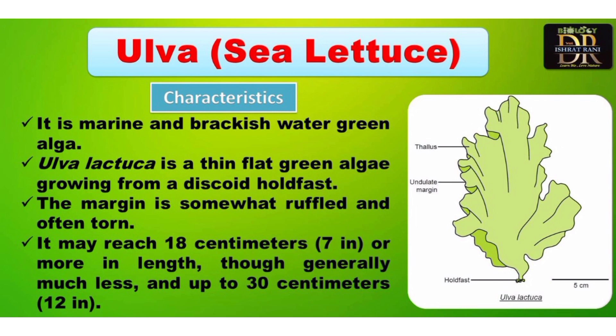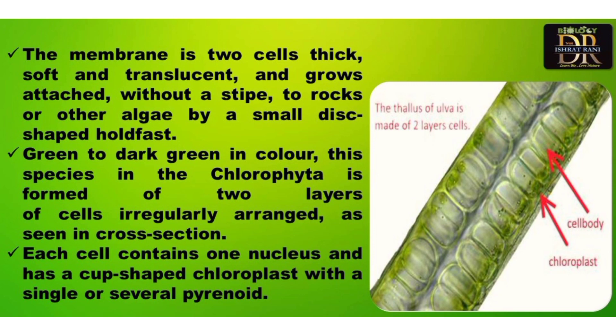Ulva lactuca is a marine algae found in coastal areas where rocky edges are present. It is a flat, thin, green-colored algae, and by means of a holdfast it is attached to the rocky ledge. The margin is ruffled or torn, and it reaches a size of 18 centimeters or 7 inches in length, up to 30 centimeters.